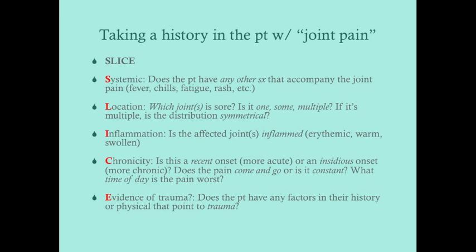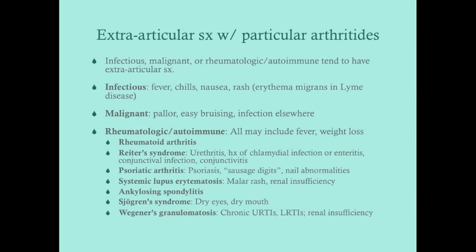Does the pain come and go or is it constant? What time of day is it worse? Inflammatory joint diseases — lupus, rheumatoid arthritis, ankylosing spondylitis — are worse in the morning and improve as the day goes on. Osteoarthritis, being degenerative rather than inflammatory, gets worse as the day goes on. E stands for Evidence of trauma — if trauma is present, that's the number one cause over systemic or autoimmune disease.